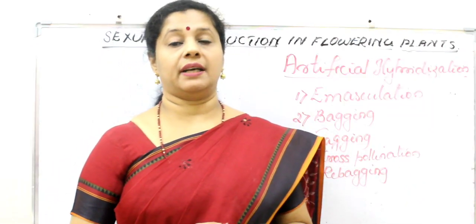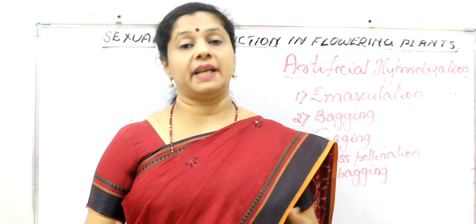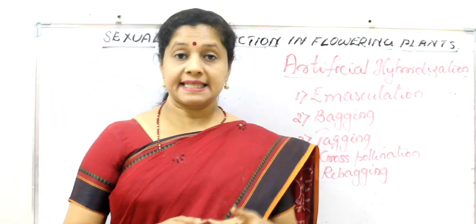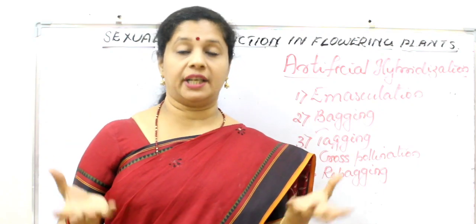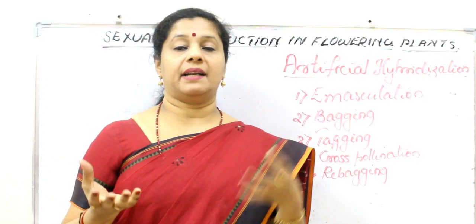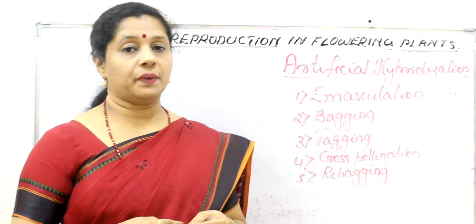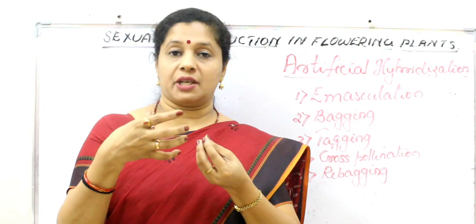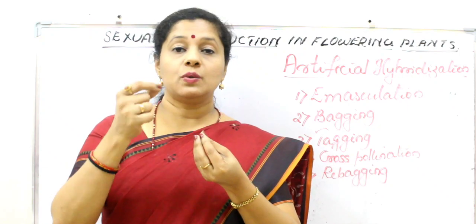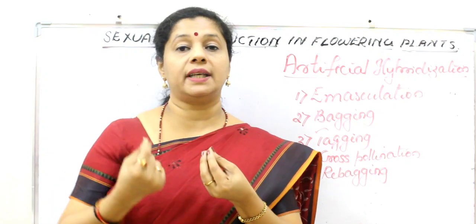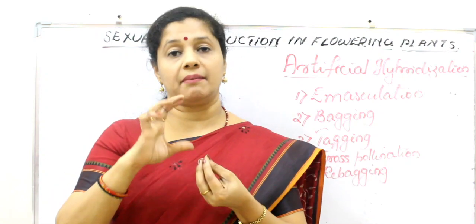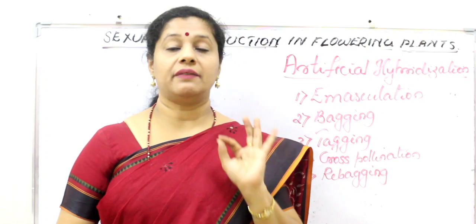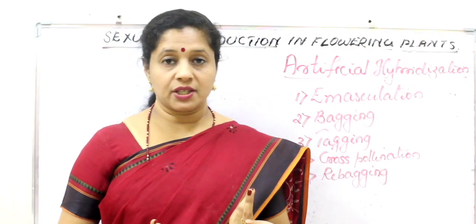When we want to improve varieties through crossbreeding programs, we need artificial pollination — called artificial hybridization. We select parents with desired qualities: one as the male parent and the other as the female parent. If it is a bisexual flower with both stamen and pistil, before the anthers mature and release pollen, we remove all the stamens using forceps — this process is called emasculation. Unisexual female flowers do not require emasculation.